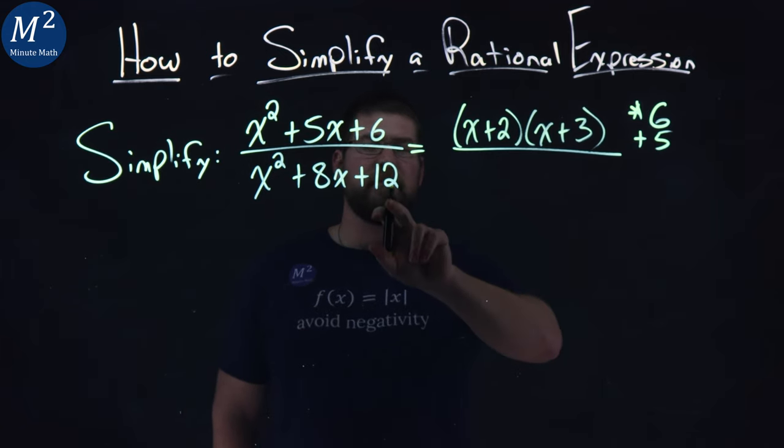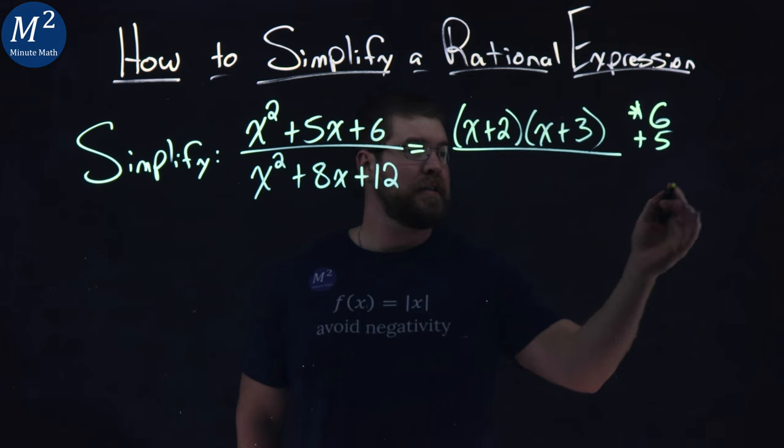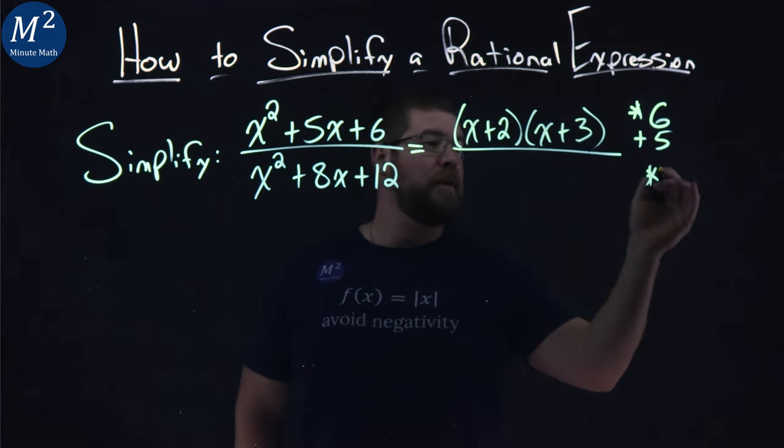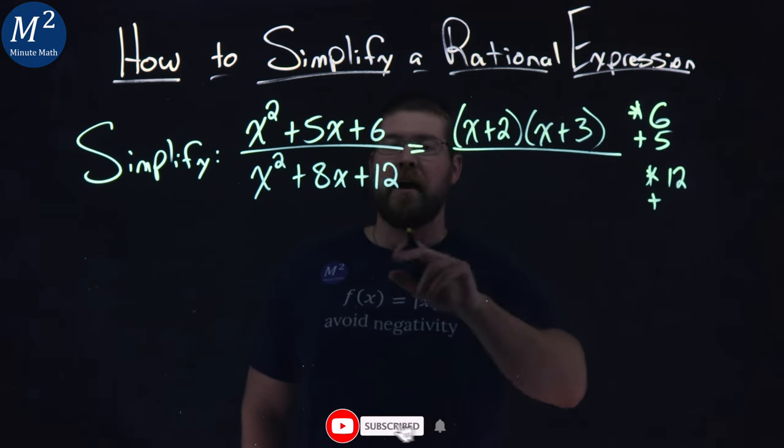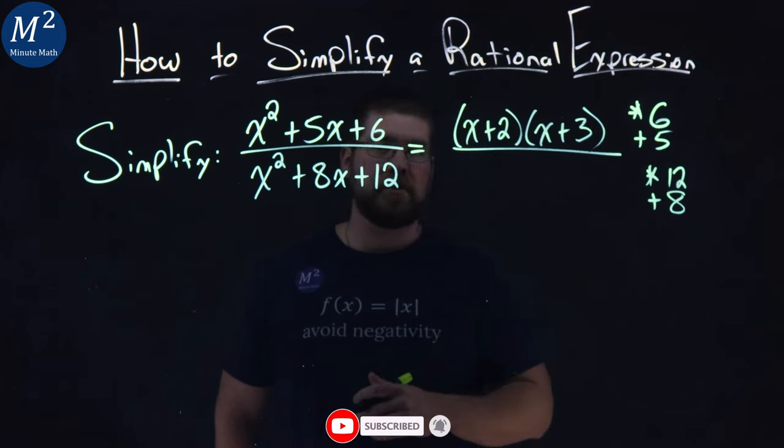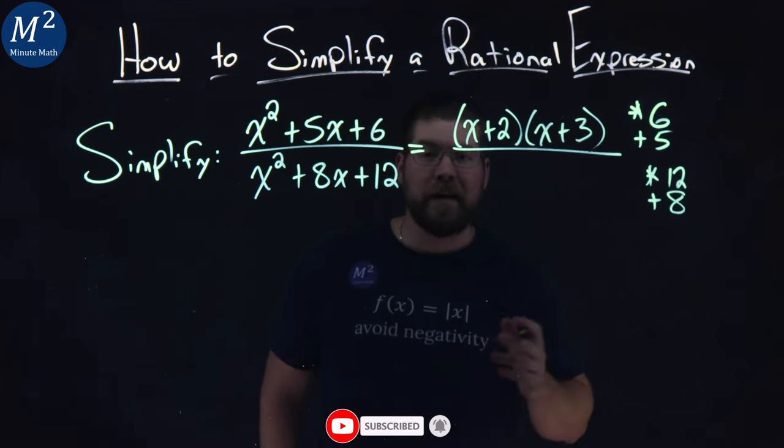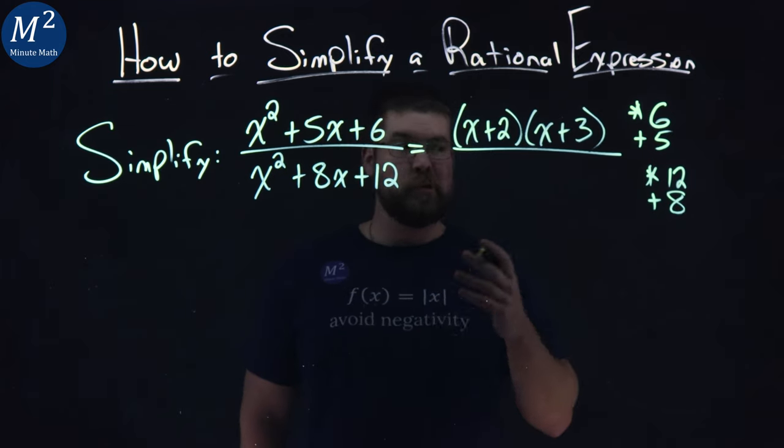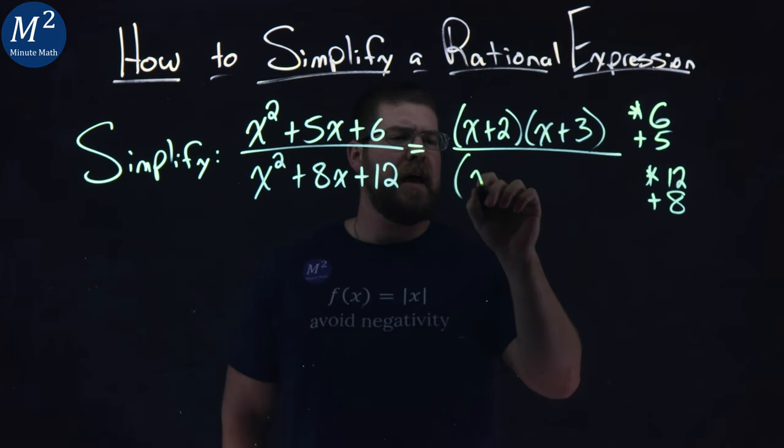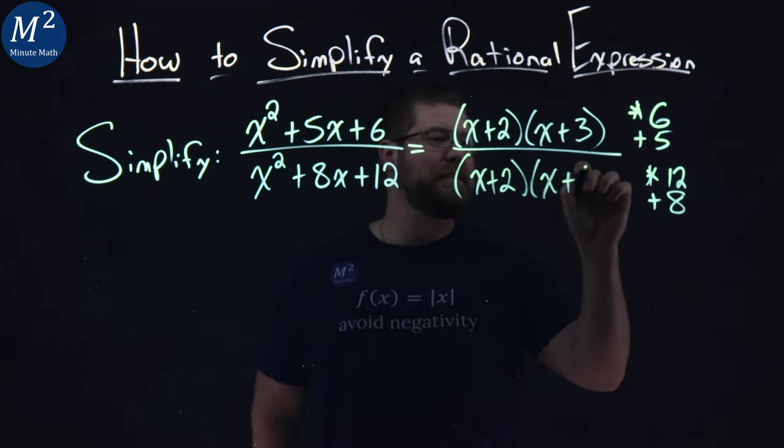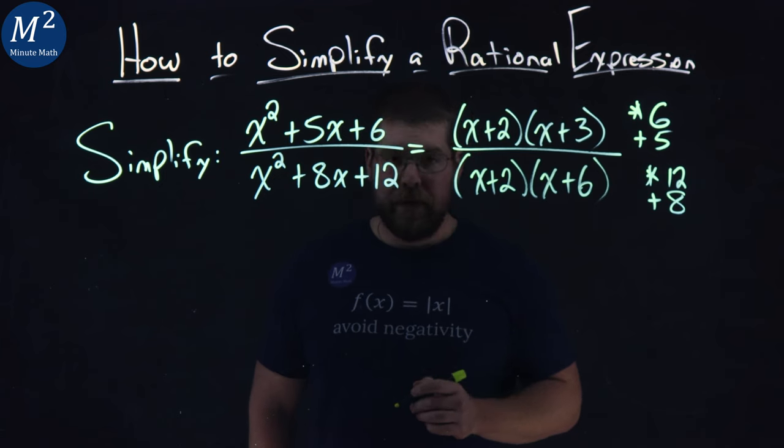Next one down, we have x squared plus 8x plus 12. Our c value multiplied to be 12, and our b value we're adding to be 8. What two numbers multiply to be 12 and add to be 8? That's going to be 2 and 6, so x plus 2 here and x plus 6 right there.